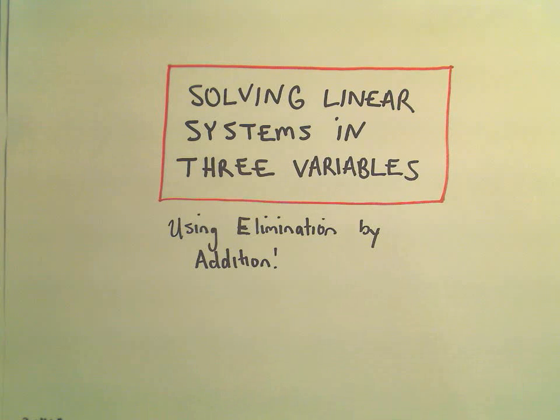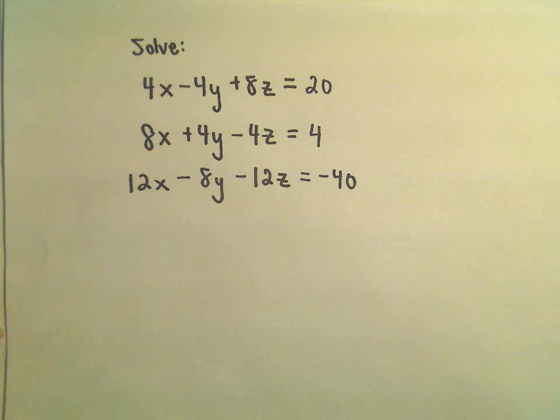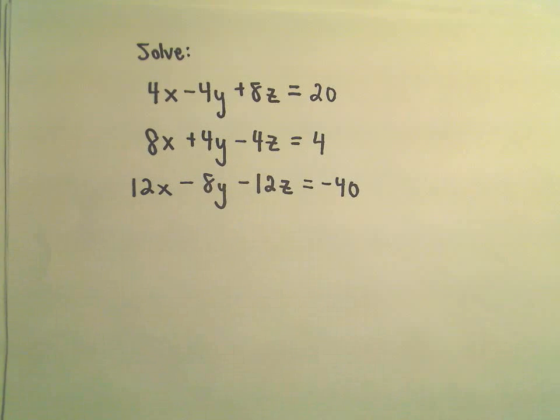Alright, so one more example here of solving a linear system of equations in three variables using elimination by addition. We've got 4x minus 4y plus 8z equals 20, 8x plus 4y minus 4z equals 4, and then 12x minus 8y minus 12z equals negative 40.